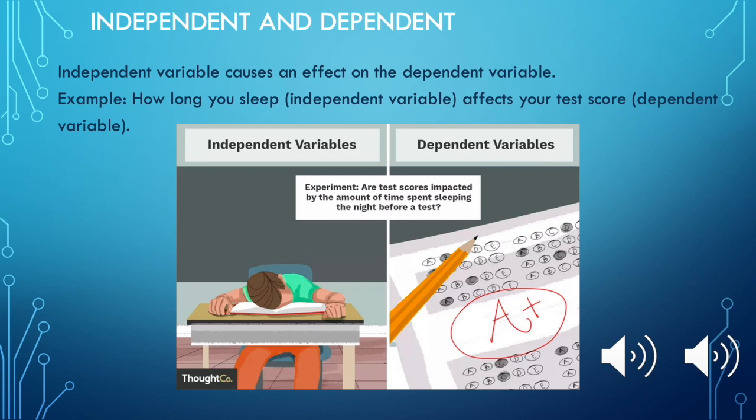To determine which variables are independent and dependent, you can ask yourself which one causes an effect on the other one. For example, does how long you sleep affect your test score, or do your test scores affect how long you sleep? Since how long you sleep affects your test scores, your test scores would be dependent and how long you sleep would be independent.